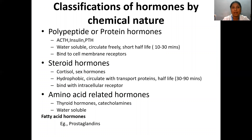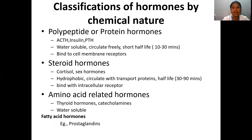Classifying hormones by chemical nature, we have three major categories. The first is polypeptide or protein hormones, where the hormone is structurally made up of polypeptides. This includes adrenocorticotropic hormone, insulin, and parathormone. These are water-soluble hormones that circulate freely and have a short half-life of 10 to 30 minutes. Since they are water soluble, they bind to cell membrane receptors.